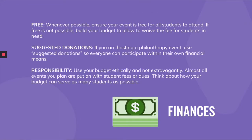The last accessibility topic is finances. Whenever possible, we would love for your event to be free for all students to attend. If that's not possible, build your budget to allow you to waive the fee for students in need. If you're hosting a philanthropy event, use suggested donations so everyone can participate within their own financial means — not 'it's $10 to attend' but 'we suggest a donation of $10.' Use your budget responsibly; think ethically and not extravagantly with money, as it's all funded by student fees or dues, and consider how your budget can serve as many students as possible.